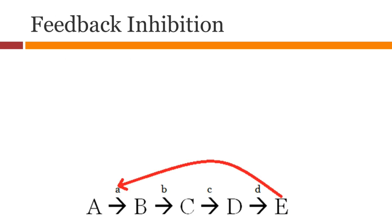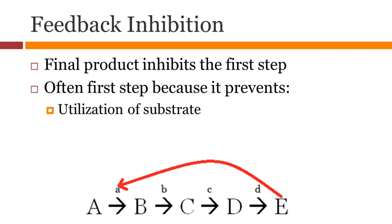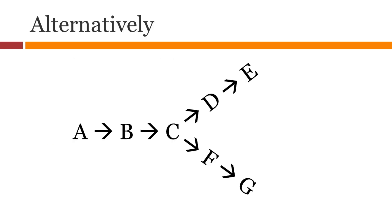Feedback inhibition is also an important aspect. Accumulation of the final product usually inhibits the first reaction. The first step is a good target because it prevents using up the substrate — the intermediates don't accumulate and the energy is not wasted. It is often the first step because there can be alternate mechanisms. For example, you can have a complex system where the final product inhibits an intermediate which in turn inhibits the first step.